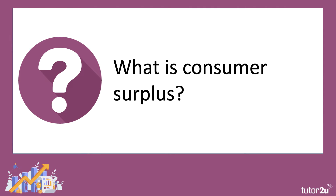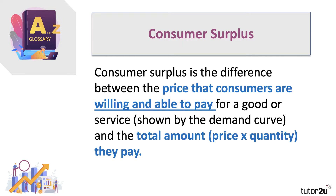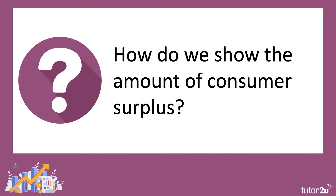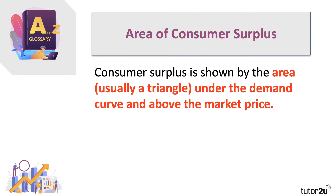A quick reminder of what the term consumer surplus means. It's the difference between the price that people are willing and able to pay for a good or a service — reflected in the private benefit curve or the demand curve — and the total amount they actually do pay, which is the price per unit multiplied by the quantity. Consumer surplus is shown as the area underneath the demand curve and above the prevailing market price; it's normally a triangle.